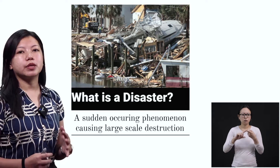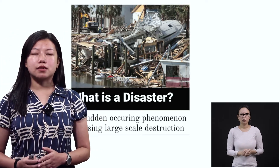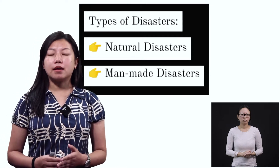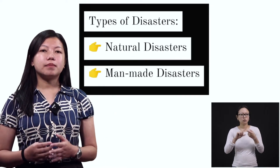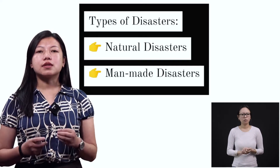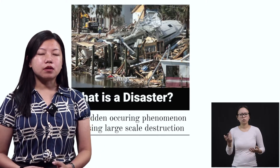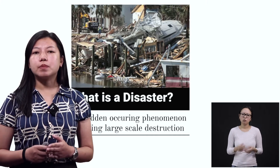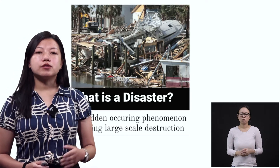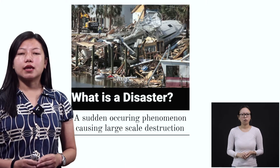What you see here in the picture is destruction, and it was caused by a disaster. So disasters can be of different types — it could be natural disasters or man-made disasters. Either of these causes heavy damages to houses, to the area, and to people. In many cases people die during disasters and there is a huge loss. A disaster is a sudden occurring phenomenon causing large-scale destruction.